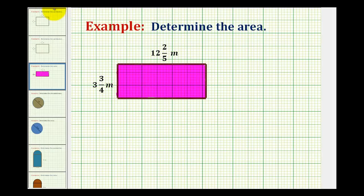The formula to determine the area of a rectangle is length times width. It doesn't matter which of these we call the length and which we call the width. Let's go ahead and call this the length and we'll call this the width. So the area will be the product of 3¾ meters and 12⅖ meters. I'm going to go ahead and leave the units off while we determine this product.